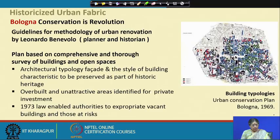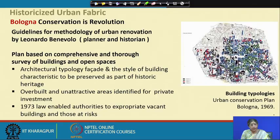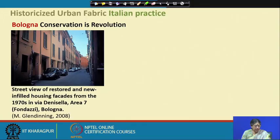A 1973 law enabled authorities to expropriate vacant buildings and those at risk. This is also a very important tool, and at what price — market price or lower — has to be very clearly spelt out. As you can see, this is a street view of the restored and new infill housing facades from the 1970s in a particular area of Bologna — a very lived-in area. Not all buildings are old; these are infill developments, new buildings in old settings where people continue to stay in a proper liveable condition.